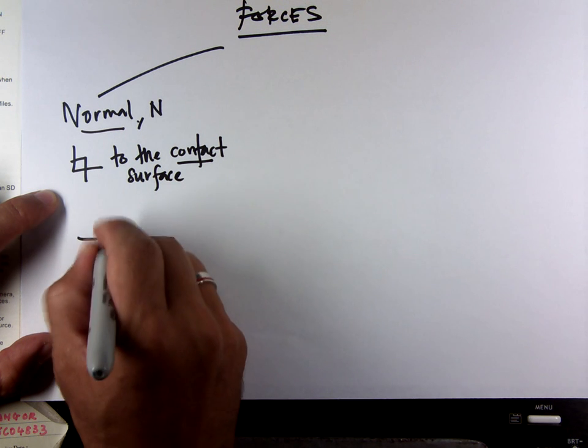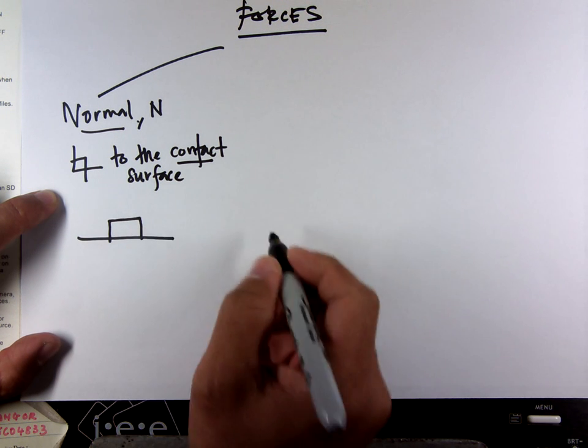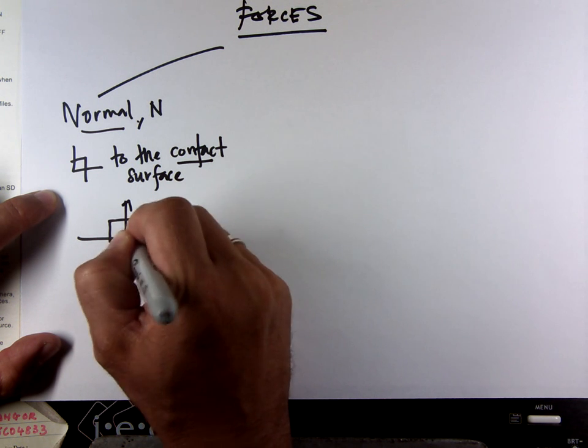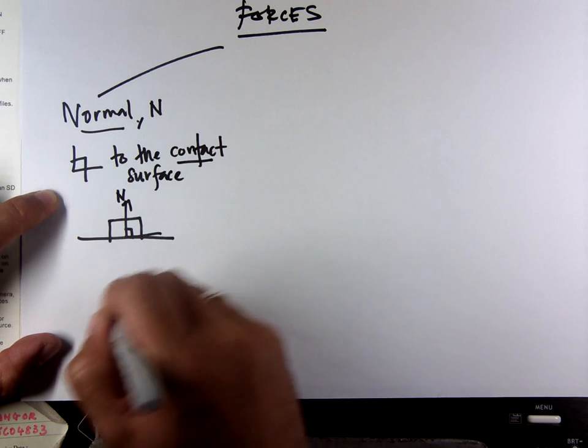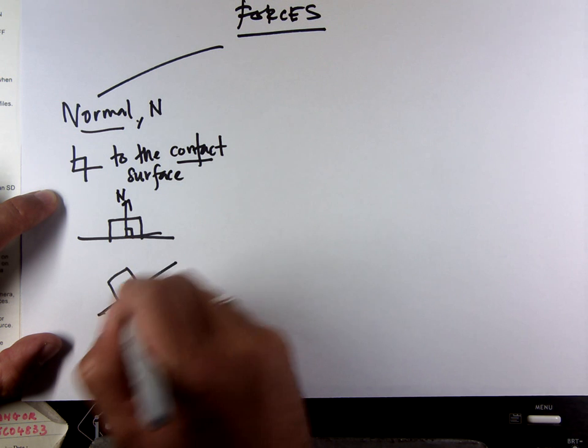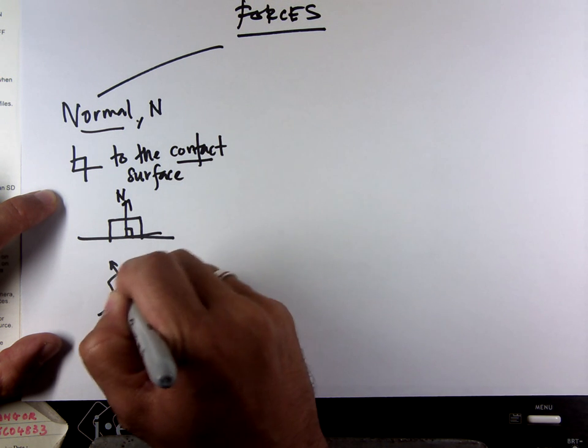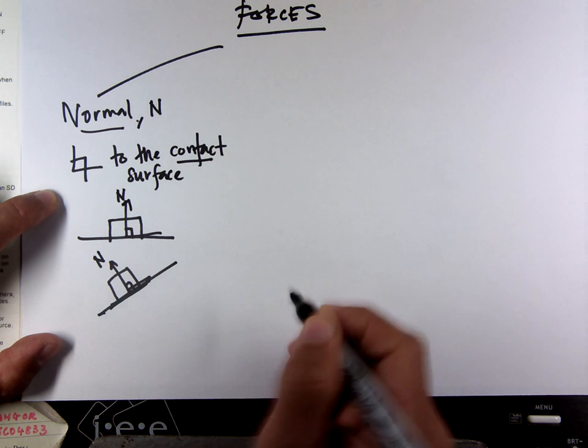We have this surface. Let's say this is an object. Perpendicular. This is normal force. This is the contact surface. Perpendicular. This is normal force.